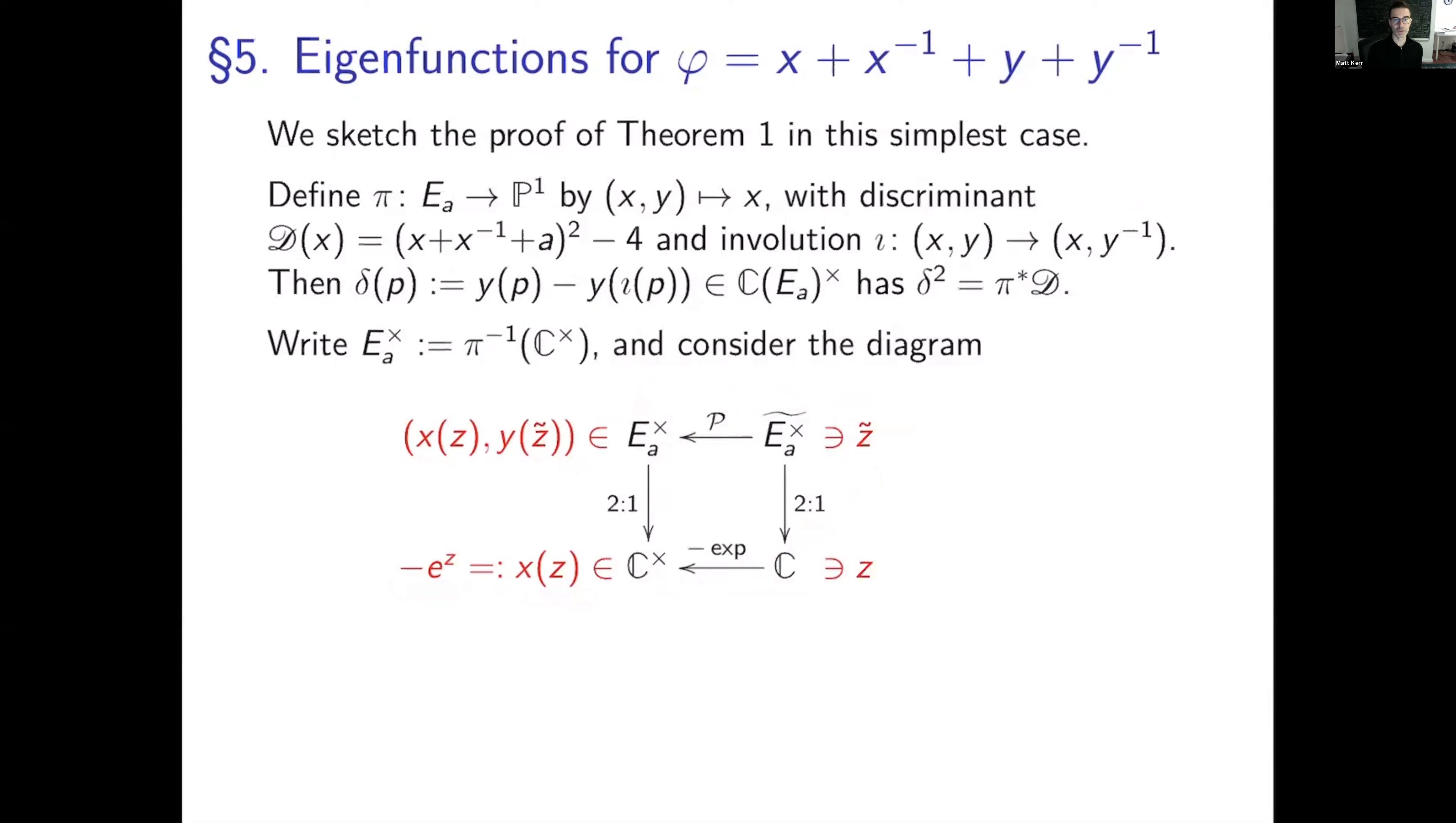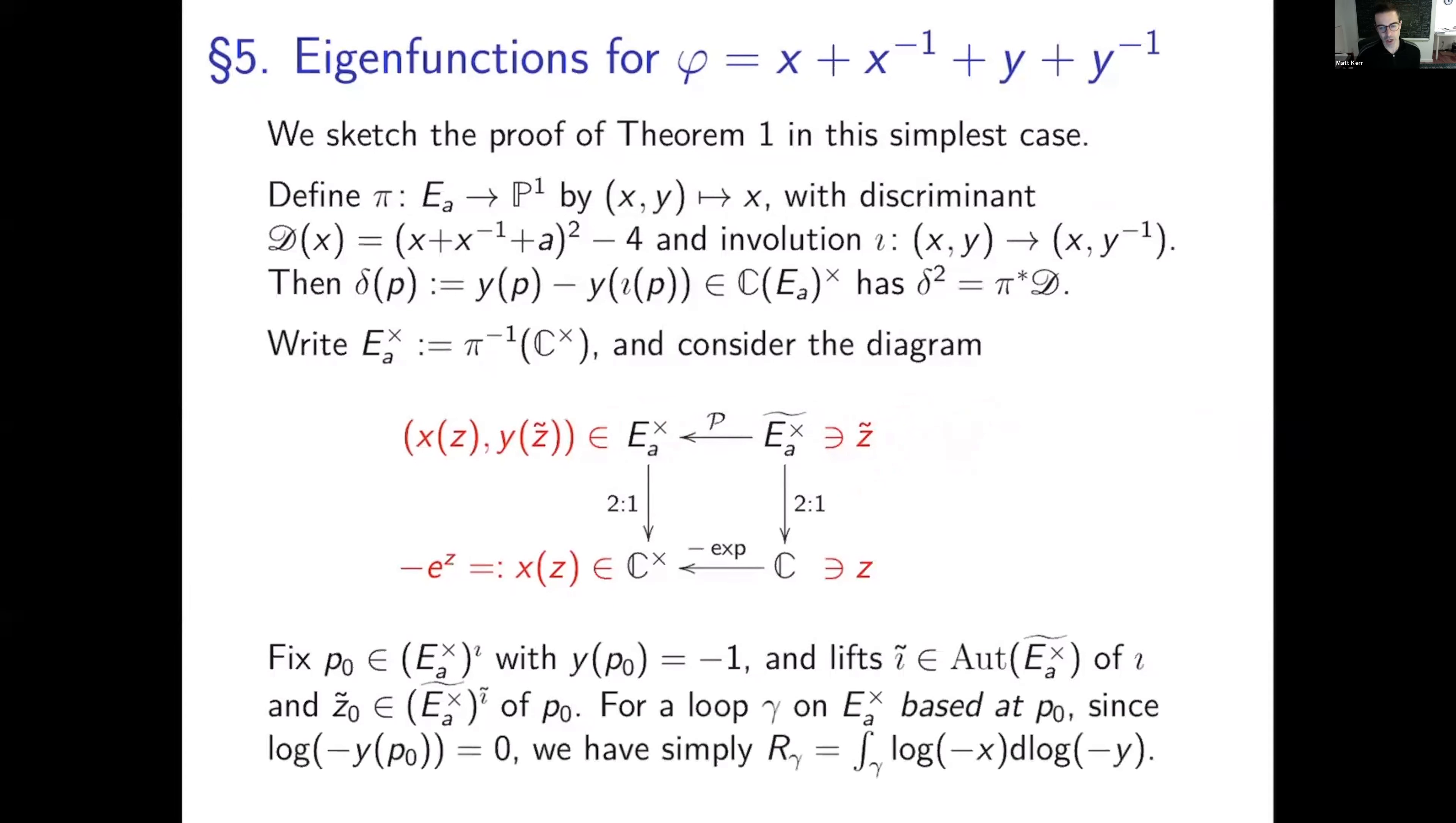So I take a base point p naught in here that's fixed under the involution and has y of p naught equals negative one. And then I need lifts of the involution to here. That's an involution of this over C. That would be called i tilde. And I need a lift of the point p naught here to, well, I guess I call it z naught there. And for a loop on E_A cross based at p naught, so a loop over here, since log of minus y of p is zero, this is negative one, log of one is zero, we can cross out the term log of minus y of p naught integral of dx over x from the Beilinson regulator formula. And the regulator formula now simply reads this. This is a simplification that you can make in this case that you can't make in the other cases.